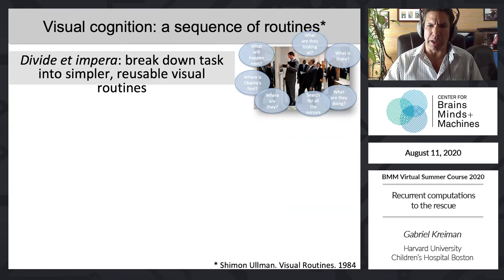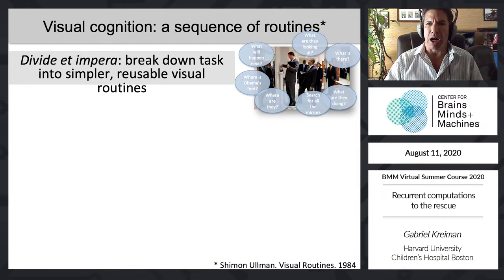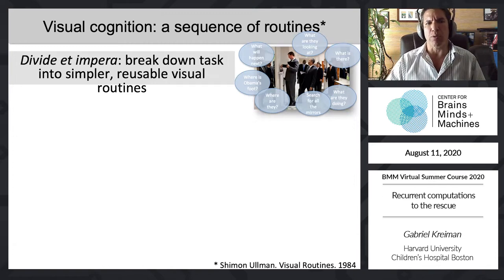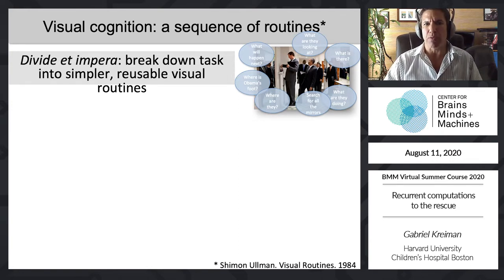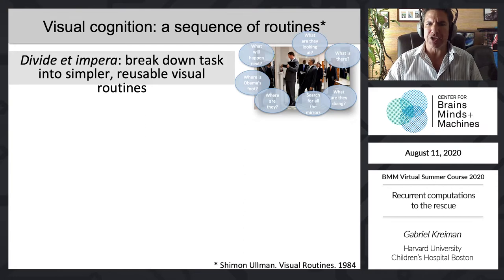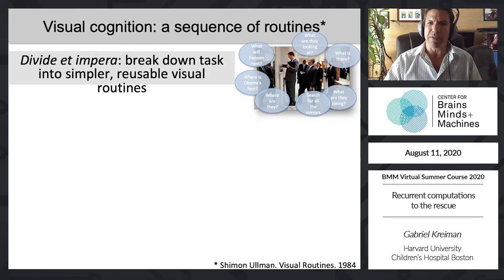How do we incorporate our understanding of basic neural circuits underlying visual processing to eventually interpret images the way humans do? I'm going to advocate for a divide-and-conquer strategy where we break down such a complex task into simple, reusable visual routines. The term 'visual routines' was coined by Shimon Ullman — we'll hear from him in a couple of days. The idea is a compositional array of functions we can flexibly reuse to solve different aspects of vision.